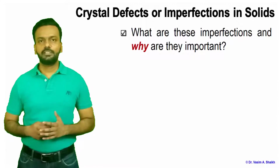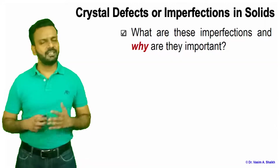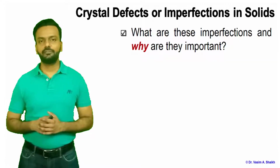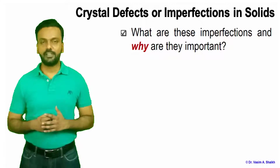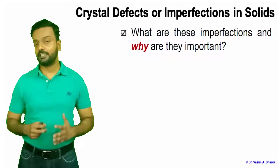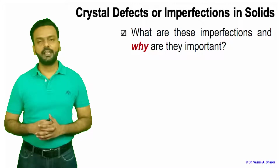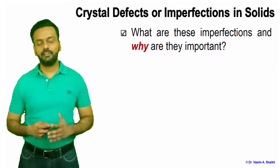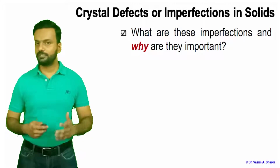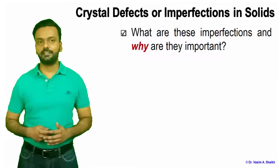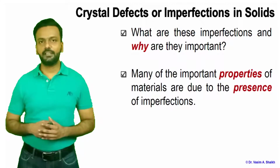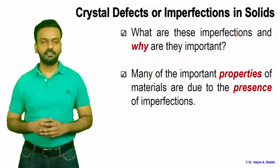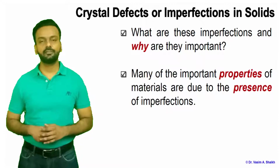So what are these imperfections and why are they important? As I said earlier, some defects are already there in the material and without these defects, some properties of the material cannot be realized. They are there in the material and sometimes we purposely put such defects in the material to get very important properties, which we will see in the upcoming slides.